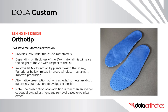Ortho Tip – An EVA reverse Morton's extension provides EVA under the second to fifth metatarsal heads. Depending on EVA thickness, it raises the height of the second to fifth with respect to the first. It can improve first MPJ function by plantar-flexing the first ray, help with functional hallux limitus, improve the windlass mechanism, and improve propulsion. Alternatives include a first metatarsal cutout, a first ray cutout, or a forefoot valgus extension. Note: prescribing an addition rather than an in-shell cutout allows adjustment and removal based on clinical effect.